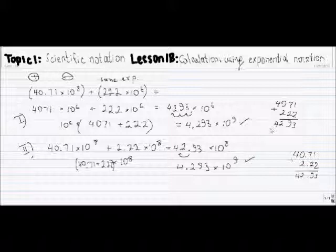It is up to you which method to choose — sometimes one can be a little easier. Now let's continue with multiplication and division. For multiplication, the rule is: a to the n times a to the m. We keep the same base a, and the exponents n and m are added together to give n plus m.